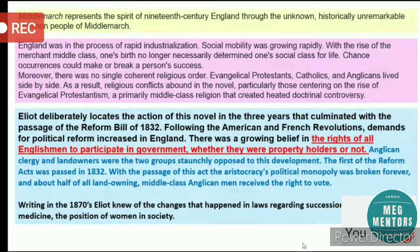Chance occurrences could make or break a person's success. Moreover, there was no single coherent religious order — religion came to be questioned. England had Evangelical Protestants, Catholics, and Anglicans all living side by side. As a result, the novel presents a lot of religious conflicts, particularly those centered around the rise of Evangelical Protestantism, which is primarily a middle-class religion that created many doctrinal controversies.